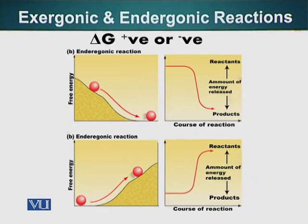In biology, these reactions are not always one-sided. If a reactant can become a product, the product can also become the reactant — these are reversible reactions.